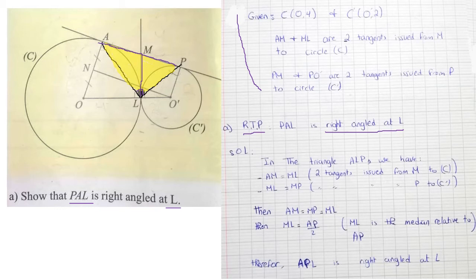I have tangents and M is a point exterior to the circle. I can use the property: if a point is exterior to a circle and two tangents are drawn, the two tangents are equal. So ML equals MA, because they are two tangents drawn from M to circle C.